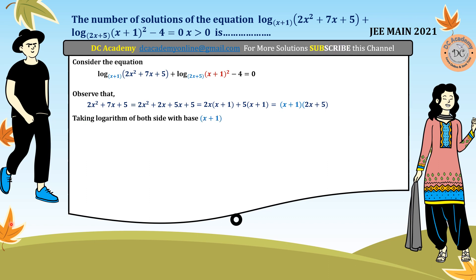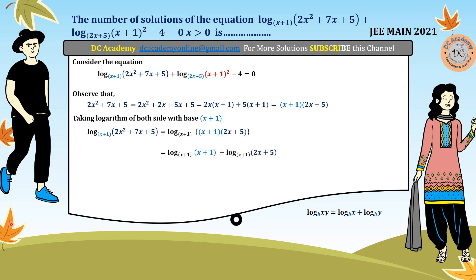Taking the logarithm, we apply the log product rule: log(xy) = log(x) + log(y) with the same base. So the first term becomes log(x+1) + log(2x+5), both with base (x+1). We also recall that log base b of b equals 1, so log(x+1) with base (x+1) = 1. The first term simplifies to 1 + log(2x+5) with base (x+1).